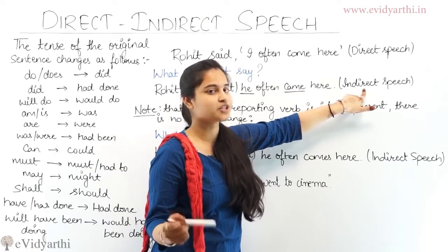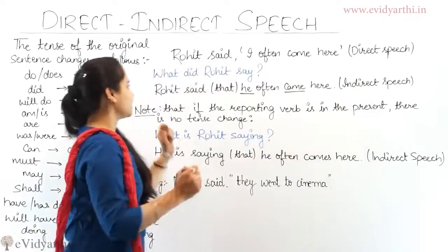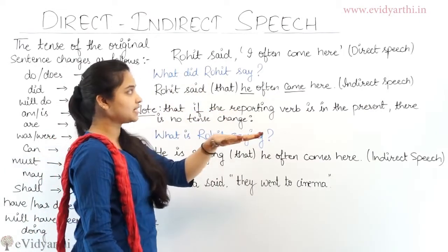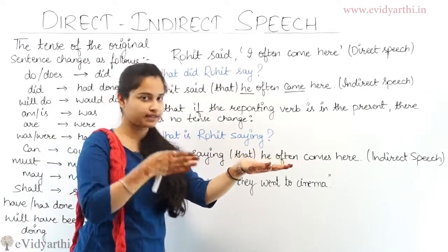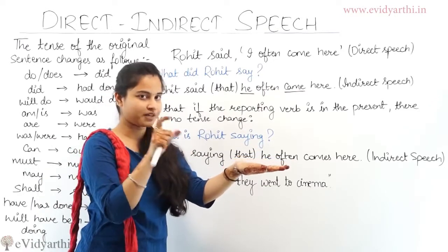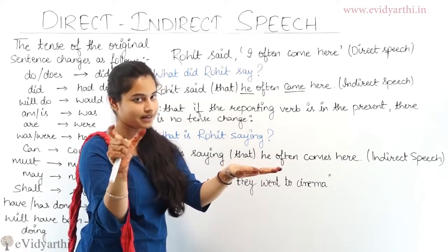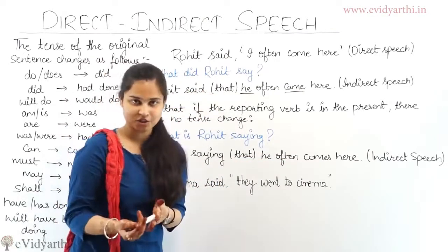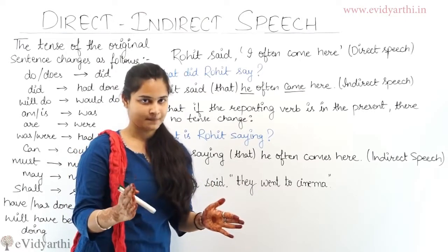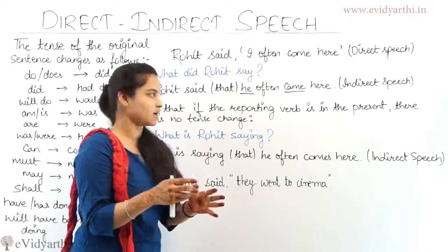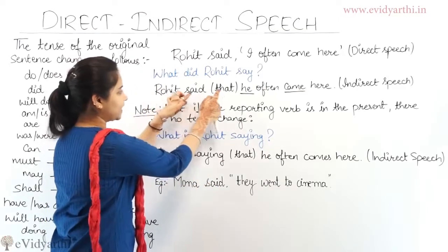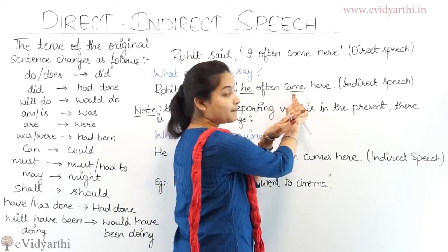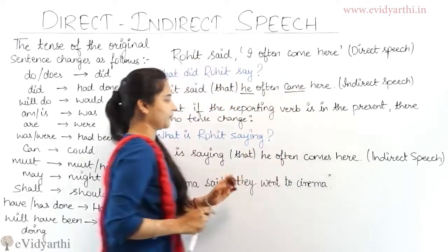Ya phir apratyaksh bhashan. Aap dekhiye yahan par ki direct speech ke andar wohi sentence hai jo actually Rohit ne kaha — wohi quoted words hain as it is. Lekin indirect speech mein tense change ho gaya hai. 'Come' ka 'came' ho gaya — past tense mein humne isko report kar diya hai.